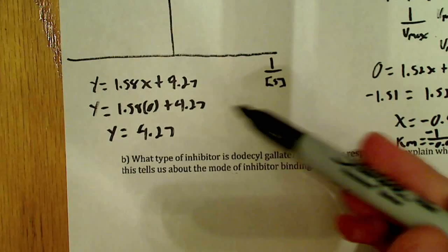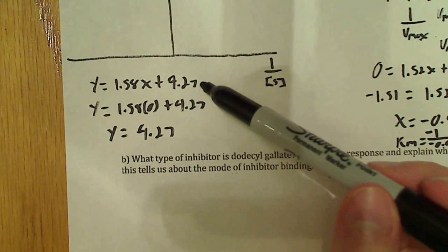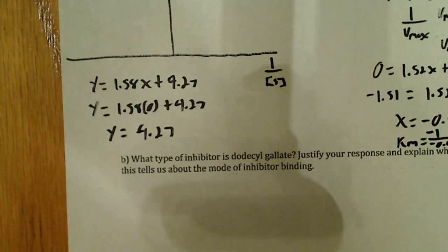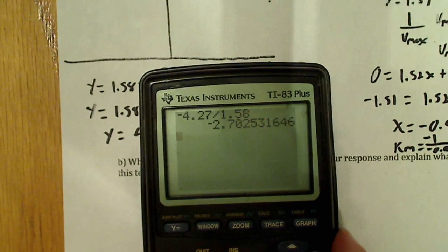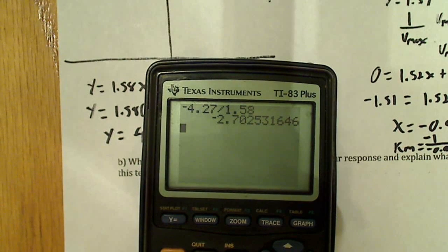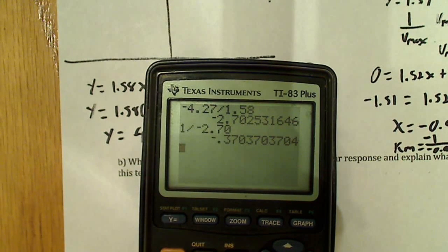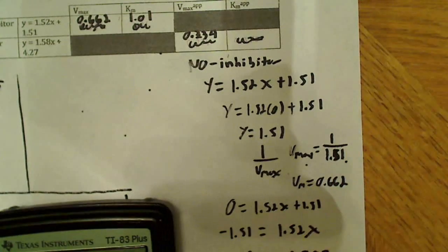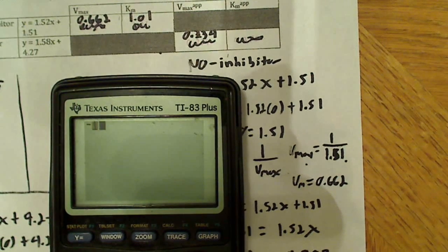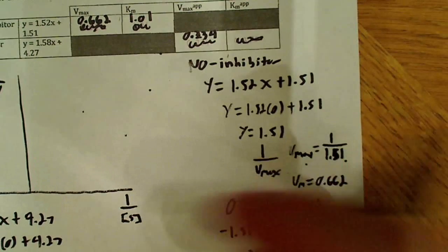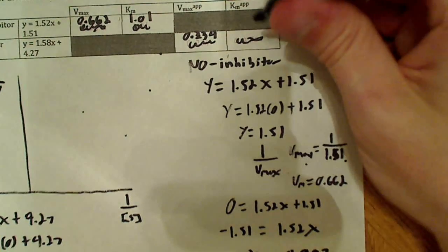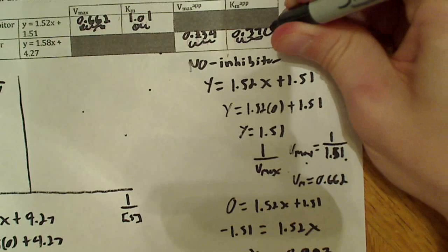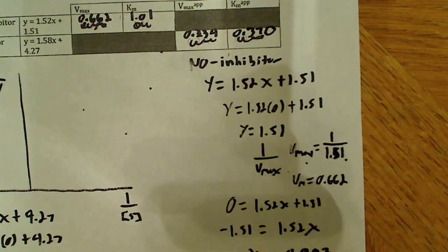For the X-intercept with inhibitor, we set Y equal to 0. Subtract 4.27 from both sides and we get negative 4.27 divided by 1.58, which gives us negative 2.70. But we need to do negative 1 divided by this value, which gives 0.370 for the KM with inhibitor.